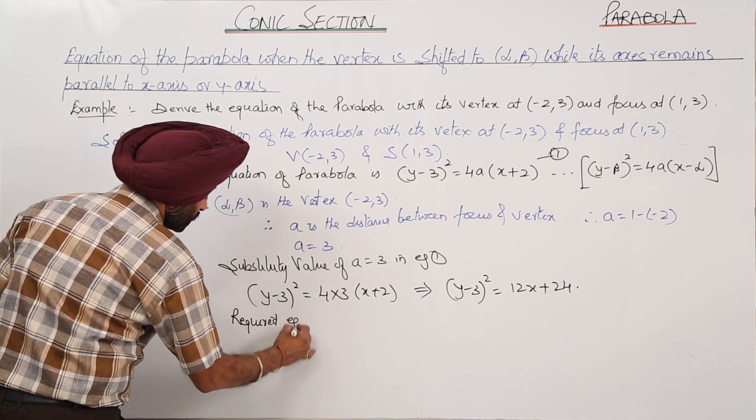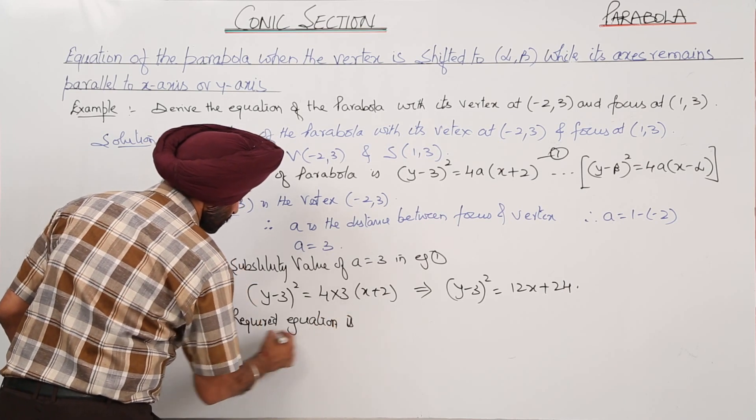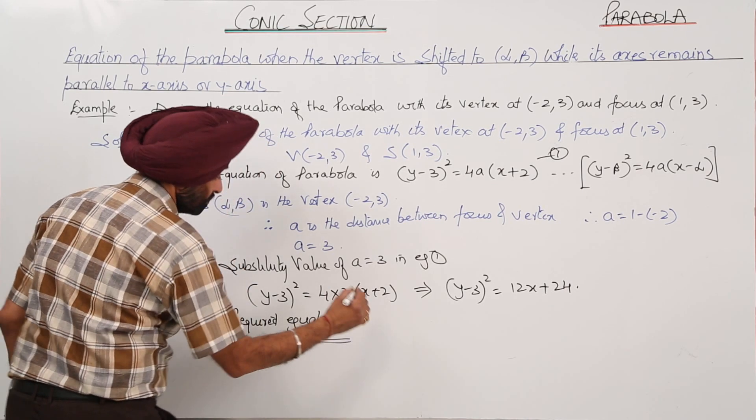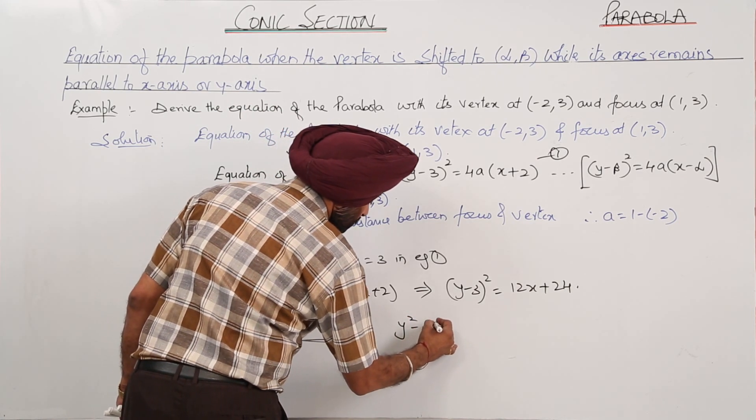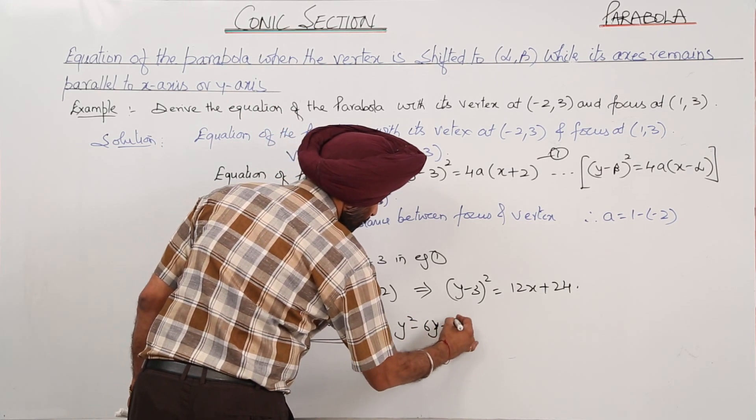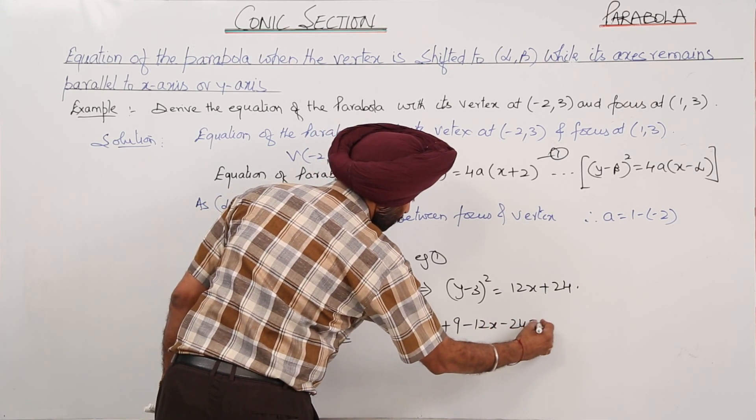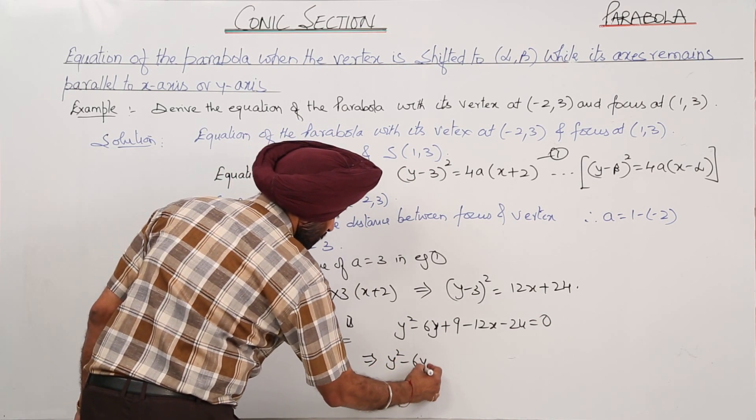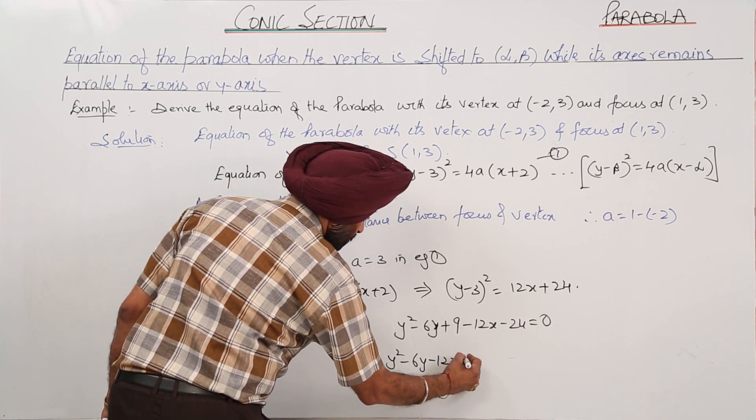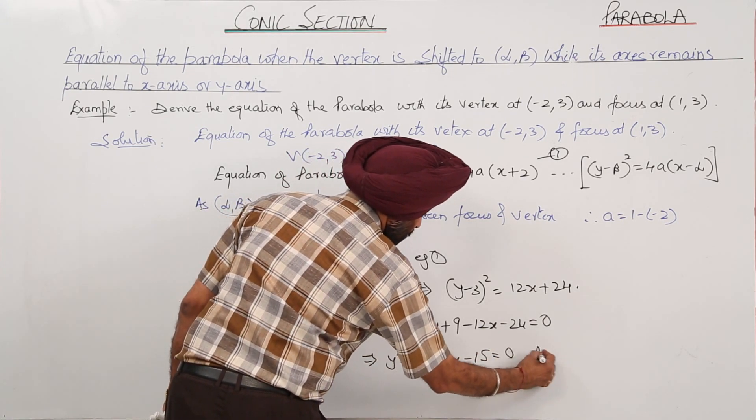Required equation is y² - 6y + 9 = 12x + 24, or y² - 6y - 12x - 15 is equal to 0.